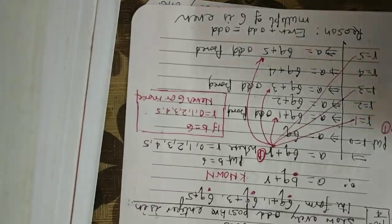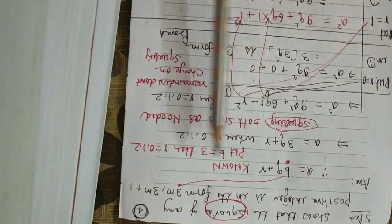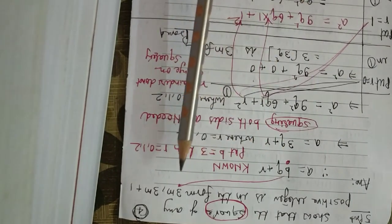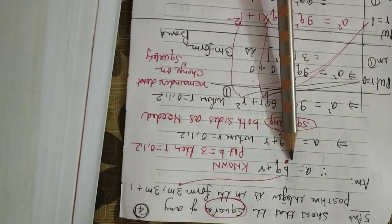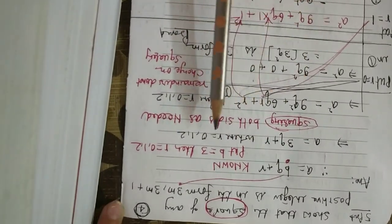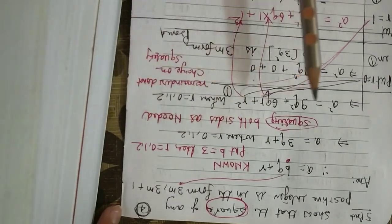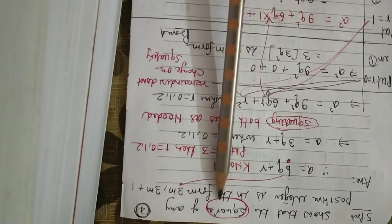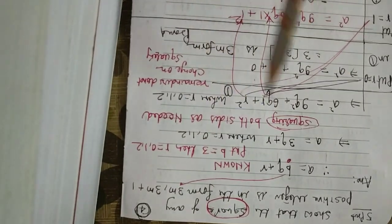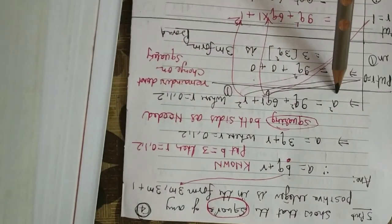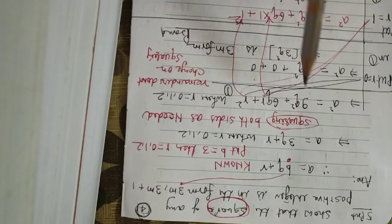Problem 5: Show that the square of any positive integer is in the form 3m or 3m + 1. Again we need 3, so use A = BQ + R and put B = 3; remainders will be 0, 1, 2. So A = 3q + r. But we need A squared, so squaring both sides gives A² = (3q + r)² = 9q² + 6qr + r². Use the (a + b)² formula: a² + 2ab + b².